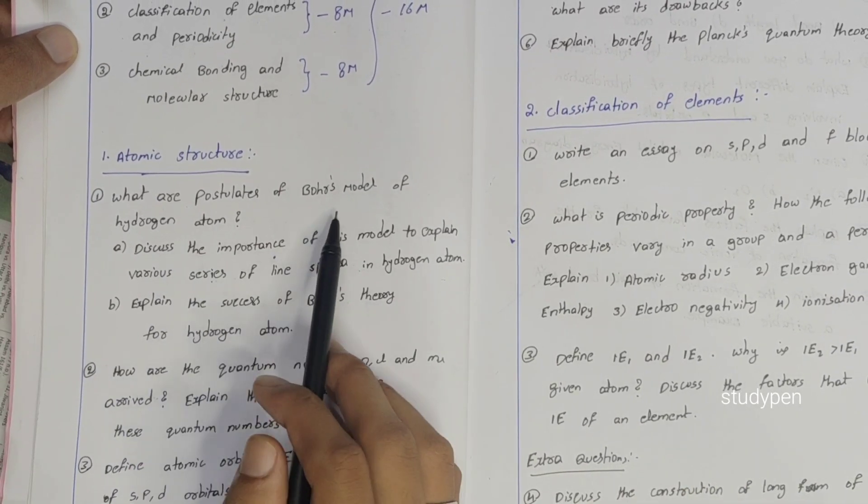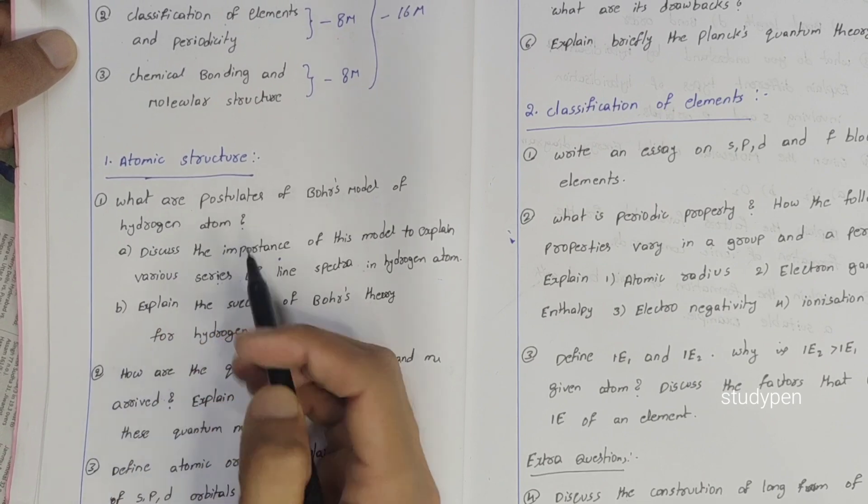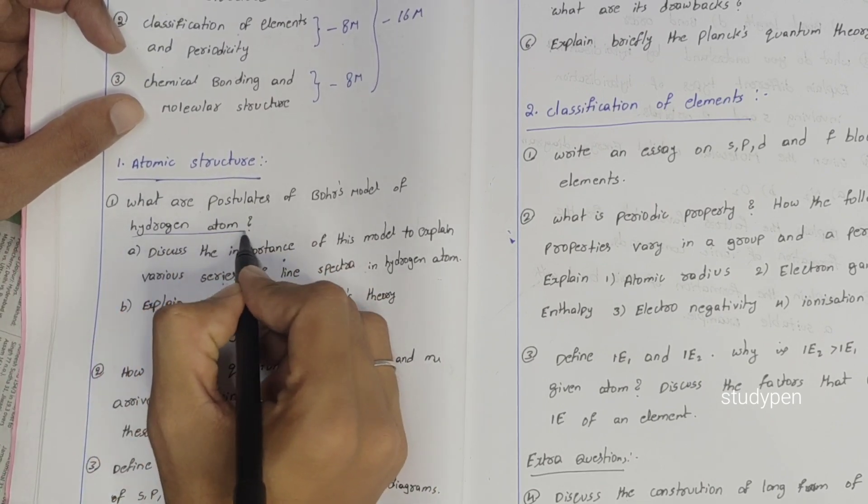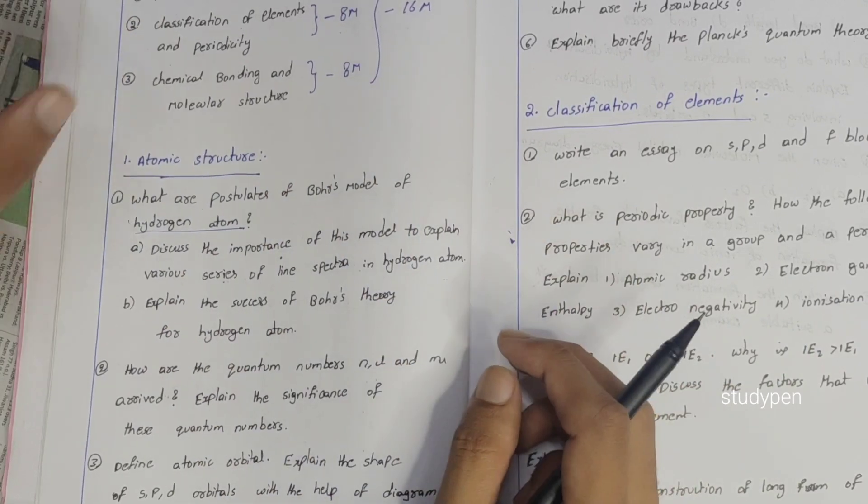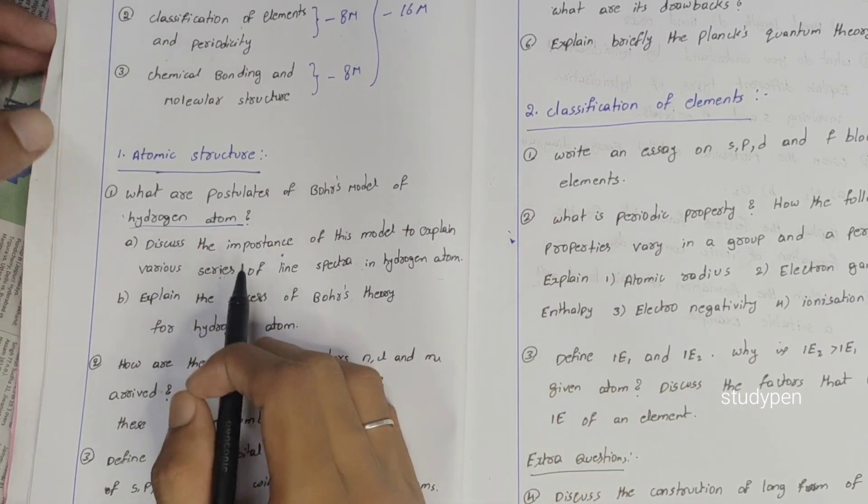We have a question: what are postulates of the Bohr's model of hydrogen atom? This is very important for hydrogen atom and postulates. You have two types of questions about eight marks.